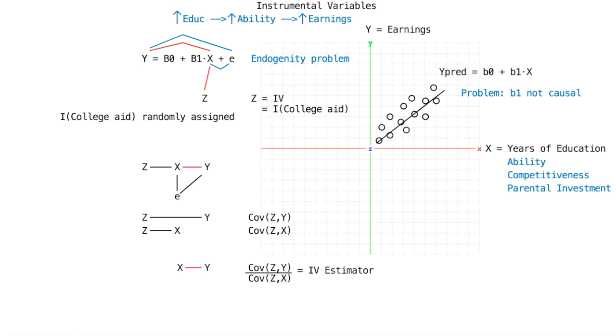So now if we actually had data on the number of years of education, earnings, and whether an individual randomly received college aid, then we could compute the sample covariance of earnings and the college aid indicator and divide by the sample covariance of years of education and the college aid indicator to get the instrumental variable estimate. The IV estimate would have a causal interpretation unlike the ordinary least squares estimate b1 from the line of best fit.